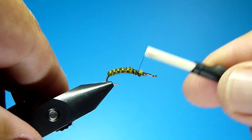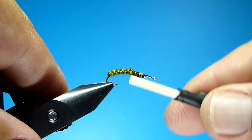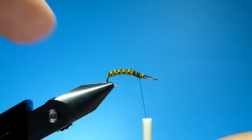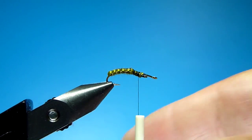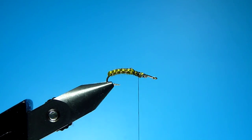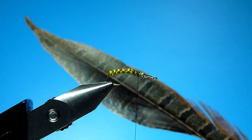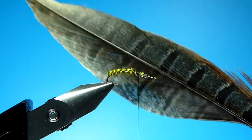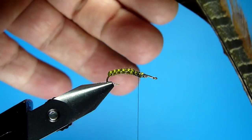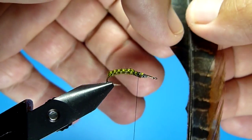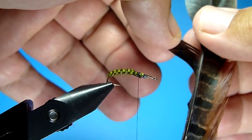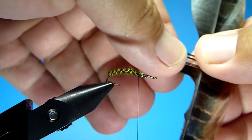Again, nothing fancy here. We're going to get it all covered up with dubbing here in a few minutes anyways. Bring your thread up to about midway in the thorax, and you're going to go ahead and grab yourself a piece of pheasant tail fiber, natural or pretty much any color or whatever shell back you want to use. I grab about a quarter inch of fibers here and then clip them off.